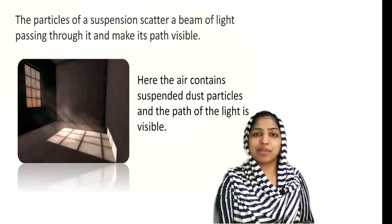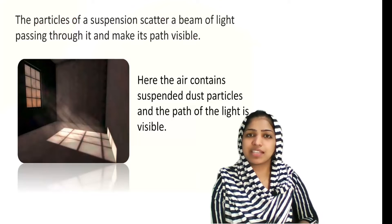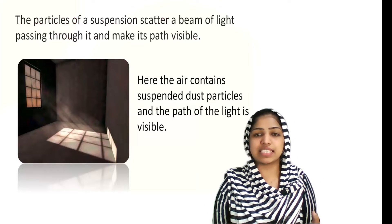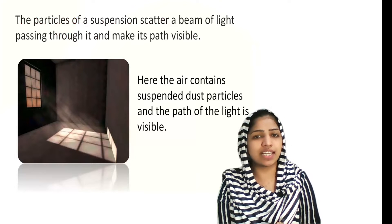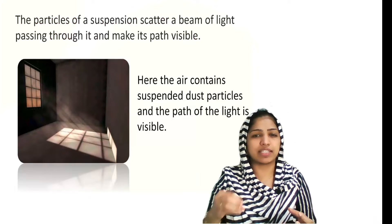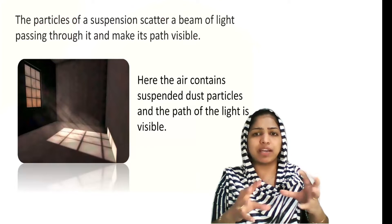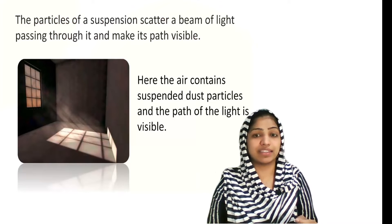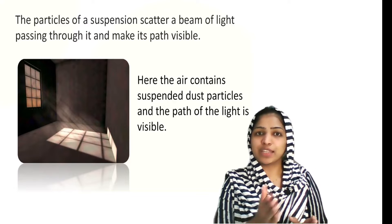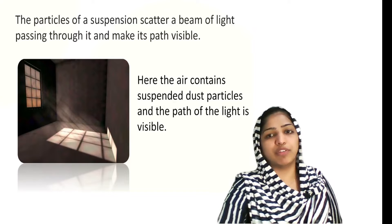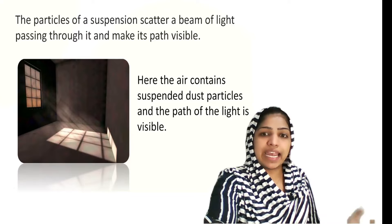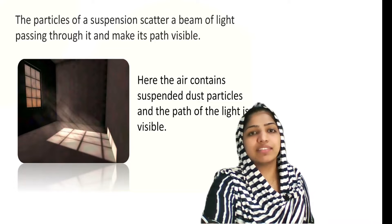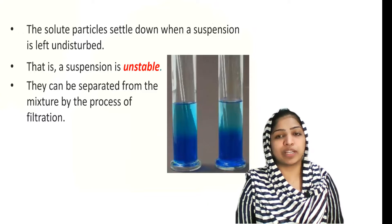Heterogeneous mixture properties are discussed in this video. Suspension — for example, air is completely mixed with dust particles. It is a mixture of air and dust. Light is visible and scattered as a beam of light through the suspension. The first property of the heterogeneous mixture is that it is an unstable mixture.